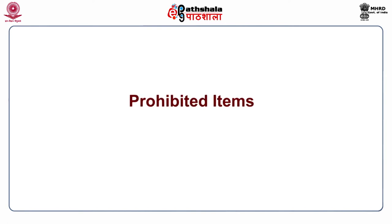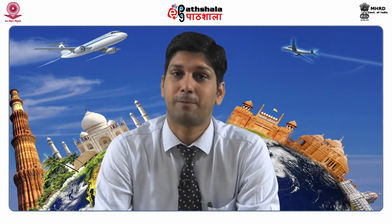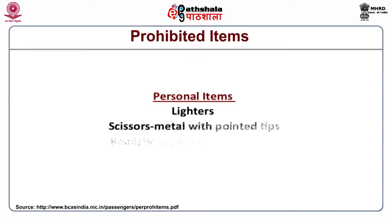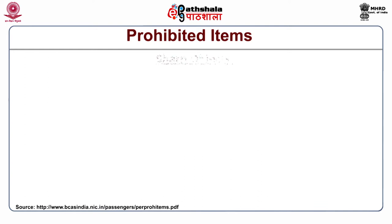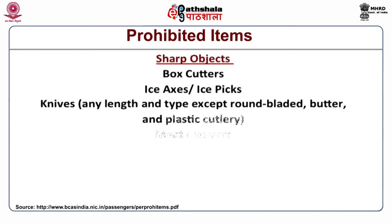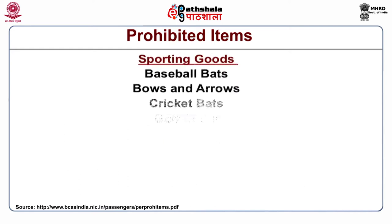The following items are restricted from being carried in the airport terminal and on the aircraft. In the category of personal items: lighters, scissors, metal with pointy tips, realistic replica toy weapons, sharp objects, box cutters, ice axes, knives, meat cleavers, razor-type blades such as box cutters and utility knives, razor blades not in a cartridge (excluding safety razors), sabers, and swords are prohibited. In the sports category, items such as baseball bats, bows and arrows, cricket bats, golf clubs, hockey sticks, lacrosse sticks, pool cues, ski poles, spear guns, guns and firearms are prohibited.